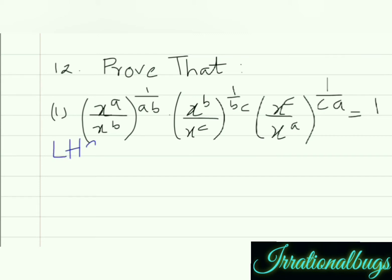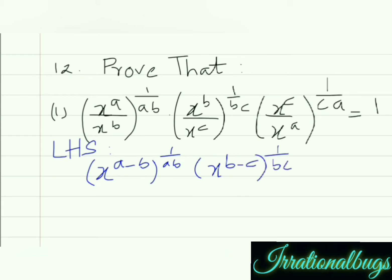हमें इस question में left hand side को 1 के equal proof करना है, जो कि हमारी right hand side है. Question law हम यूज़ करेंगे — x and x same base है, base same हो और divide में हो तो powers minus होती है. So, x raised to the power a minus b, whole raised to the power 1 upon ab. Similarly, x raised to the power b minus c, whole raised to the power 1 upon bc. And last, x raised to the power c minus a, whole raised to the power 1 upon ca.